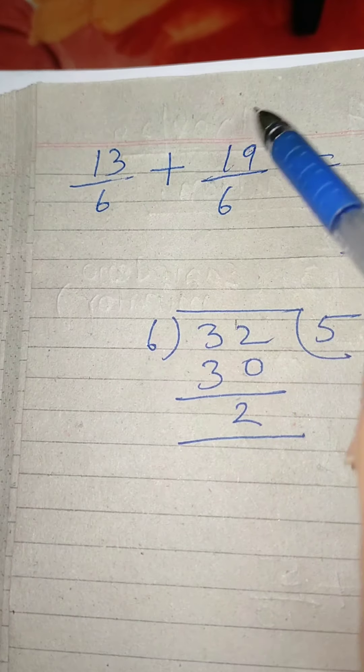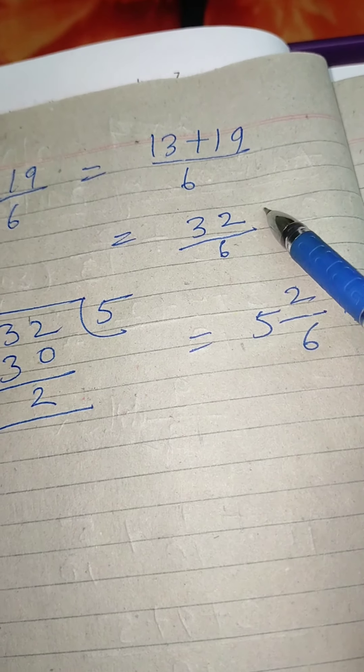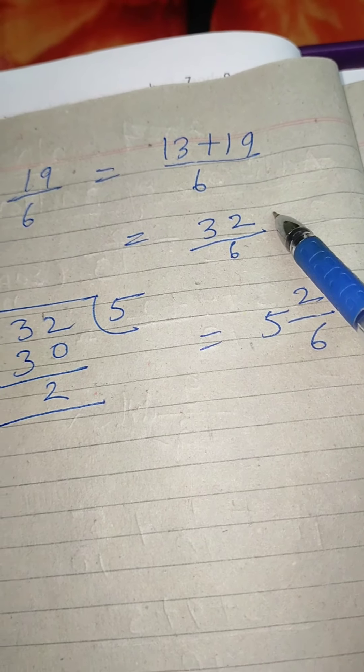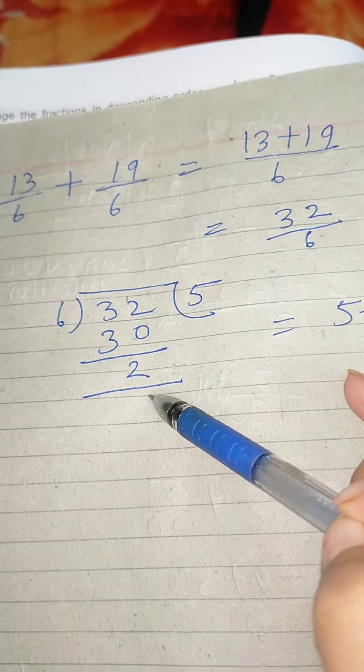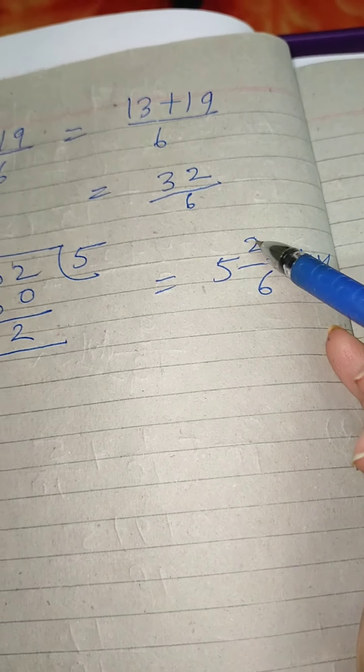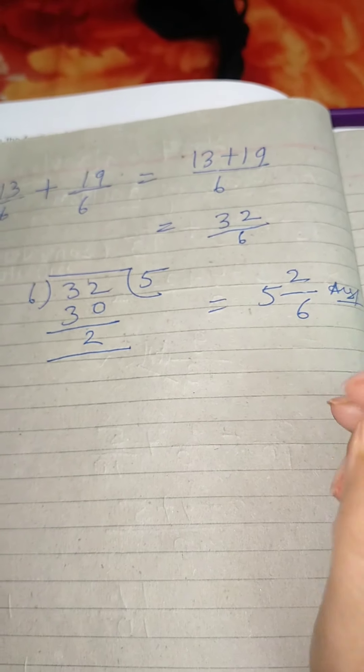13 plus 19 equals 32 by 6. Numerator is bigger, so change to mixed fraction. 6 divided into 32: 6 fives are 30, remainder 2 goes on top, 6 denominator stays the same, and 5 goes here. This will be your answer, 5 and 2 by 6.